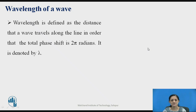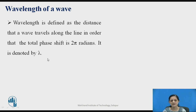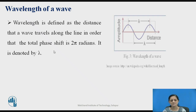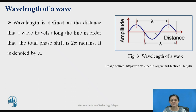Let us discuss the different characteristics of the transmission line. The first characteristic is the wavelength of a wave. Wavelength is defined as the distance that a wave travels along the line such that the phase shift obtained is equal to 2 pi radians, and it is denoted with the letter lambda. You can refer to this figure showing a sinusoidal waveform drawn with respect to amplitude and distance.